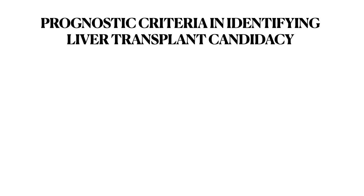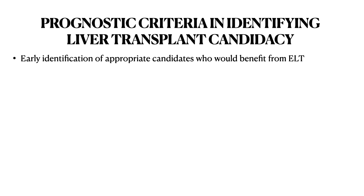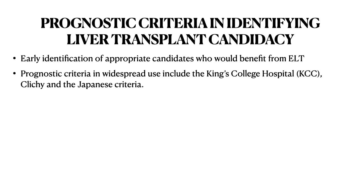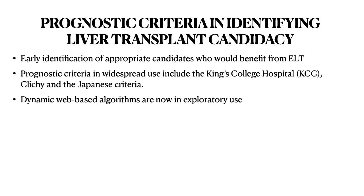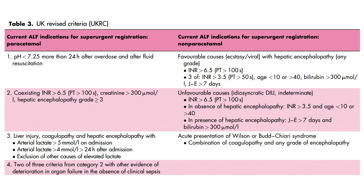Early identification of liver transplant candidates is very important so that the benefit of transplant can be realized. The prognostic criteria commonly used are the King's College criteria, Clichy criteria, and the Japanese criteria. Dynamic web-based algorithms have also been explored. Recently, the UK has shifted from the King's College to the United Kingdom Revised Criteria, due to improved medical management and better outcomes, especially with paracetamol toxicity.